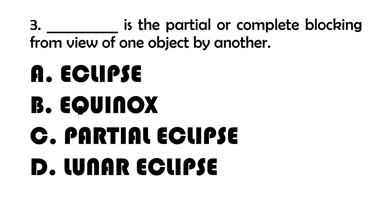Number 3. Blank is the partial or complete blocking from view of one object by another. A. Eclipse. B. Equinox. C. Partial eclipse. D. Lunar eclipse.